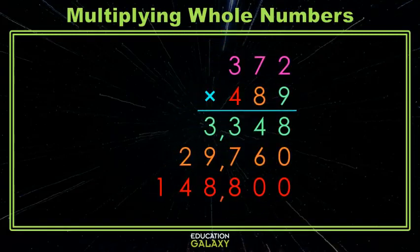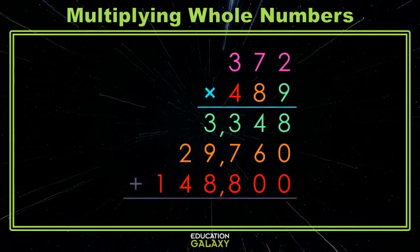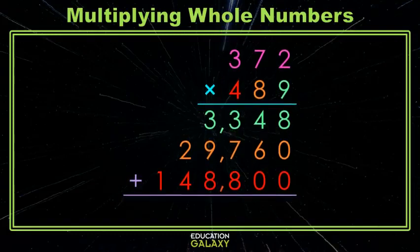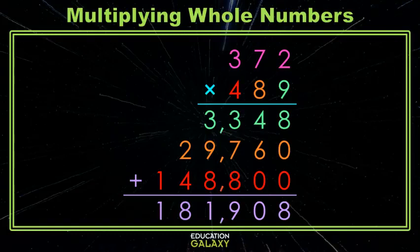Now we can just add all of these up to find our total. In the 1's place, 8 plus the 0's is 8. 4 plus 6 is 10, carry the 1. 3 and 7 is 10, plus 8 is 18, plus the 1 we carried is 19, carry the 1. 9 and 8 is 17, and 3 is 20, plus the 1 we carried. 2 plus 4 is 6, plus the 2 we carried. And now we just have the 1, and finally, you are done.